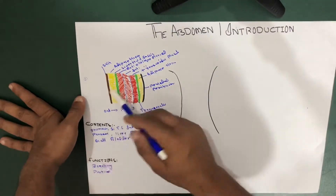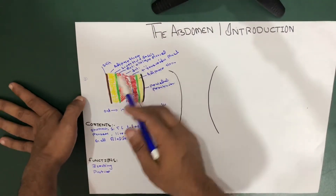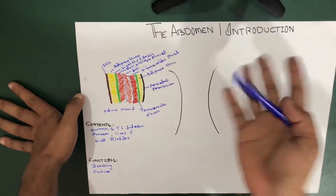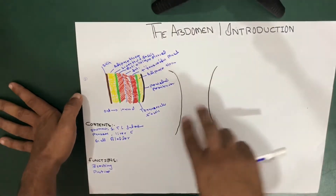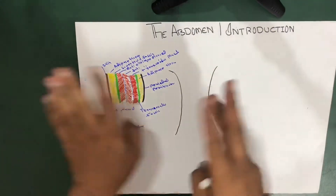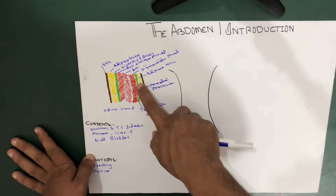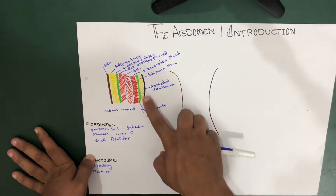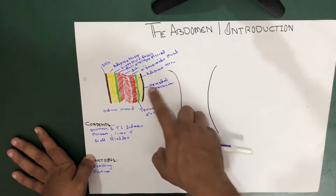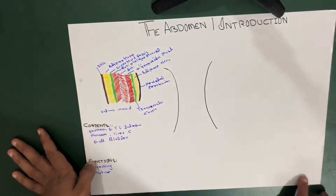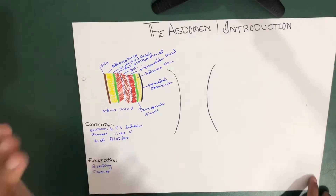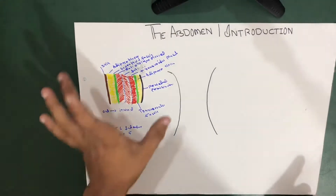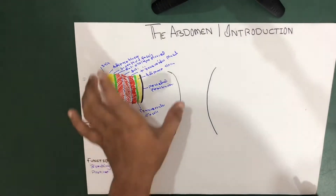To summarize the longitudinal section: skin, adipose tissue, superficial fascia, external oblique muscle, internal oblique muscle, transverse muscle — only three muscles shown here — then the transversalis fascia, adipose tissue again, and finally the parietal peritoneum. That covers the longitudinal section.